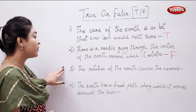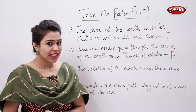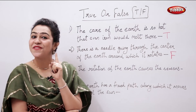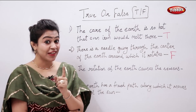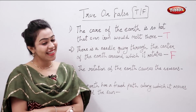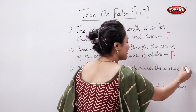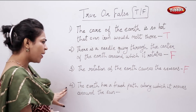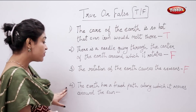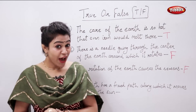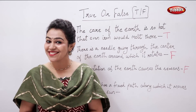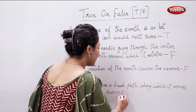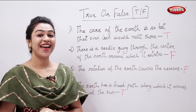The rotation of the earth causes the seasons — false. It is the revolution that causes the seasons. The earth has a fixed path along which it moves around the Sun — is it true or false? True. The fixed path is called orbit.